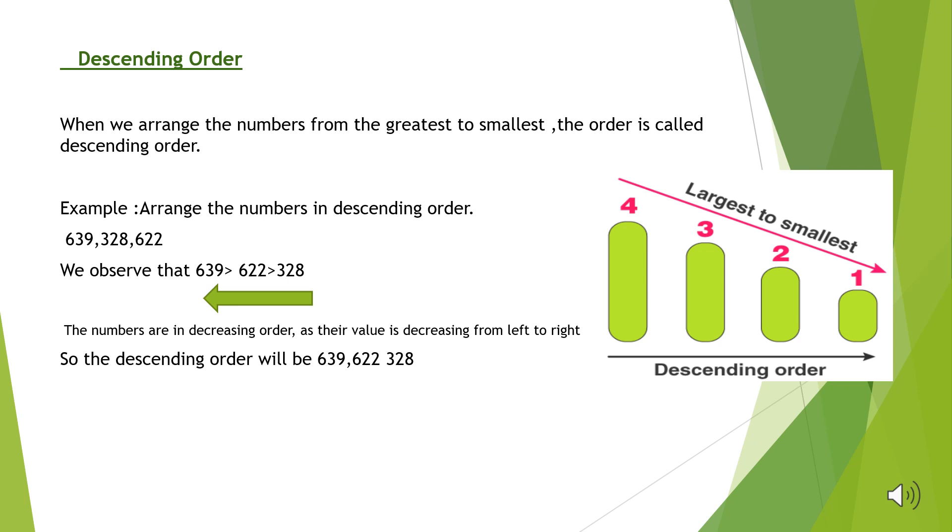Between 622 and 328, 6 is greater than 3. So, 622 is greater than 328. Therefore, the descending order is 639, 622, 328. So, descending order means arranging the numbers in decreasing order.